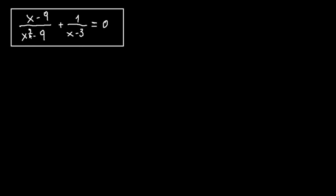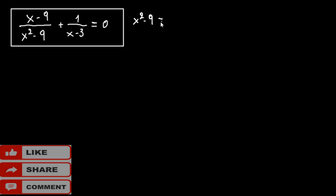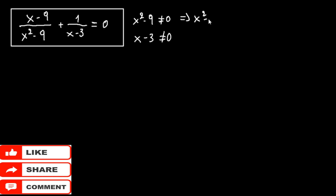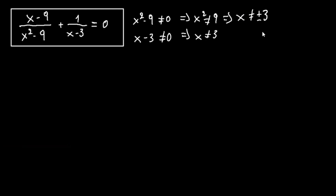First, we must say that the denominators of the two fractions must not be 0. So we have x squared minus 9 must not equal 0, and x minus 3 must not equal 0. From the first condition, x squared must not equal 9, so x must not equal plus or minus 3. From the second, x must not equal 3. So our solutions must not be plus or minus 3.